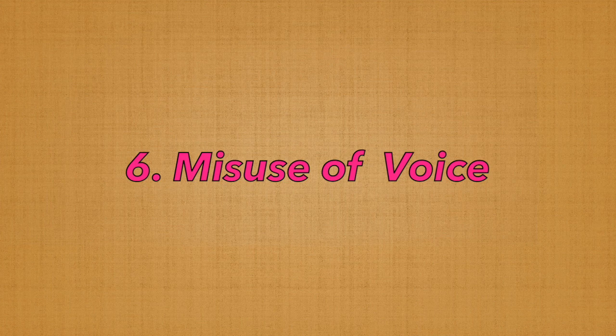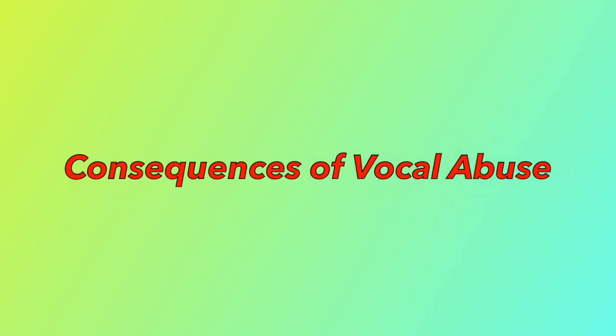Vocal abuse is anything that strains or harms vocal cords. Some examples of vocal abuse include talking too much, shouting, coughing, smoking, and constant clearing of the throat. Consequences of vocal abuse include calluses or blisters called nodules and polyps developing in the vocal cords, rupture of the vocal cords, hemorrhage of the vocal cords, paralysis of the vocal cords, and complete loss of voice.